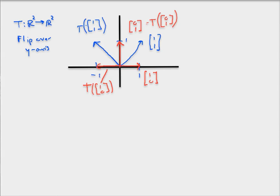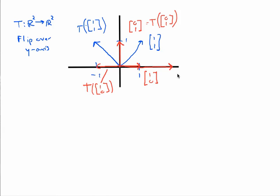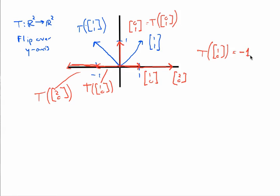There are other vectors that are also scaled in place. For example, the vector (2, 0) is just the same as (1, 0) except twice as long. Its transformation, flipped over the y-axis, is just (-2, 0), which is merely rescaling it again. The transformation of (1, 0) is just a scalar multiple — negative 1 times what we plug in. And really, any vector that sits on the x-axis is going to be rescaled in place by this transformation using a factor of negative 1.